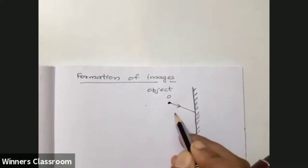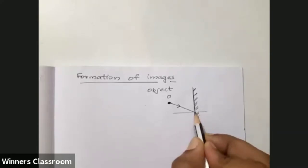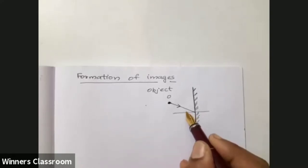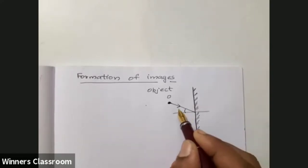I am going to draw the normal to the point of incidence. This light ray strikes the mirror perpendicular to the right line. Now I am going to mark the angle of incidence - this is the angle of incidence I.